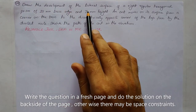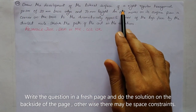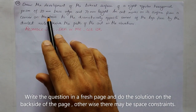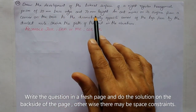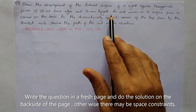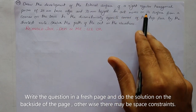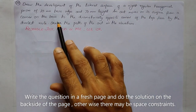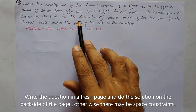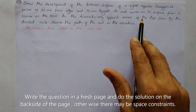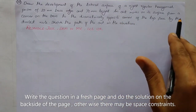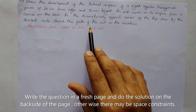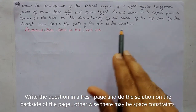Draw the development of the lateral surface of a right regular hexagonal prism of 25mm base edge and 70mm height. An ant moves on its surface from a corner on the base to the diametrically opposite corner of the top face by the shortest route. Sketch the path of the ant in the elevation.